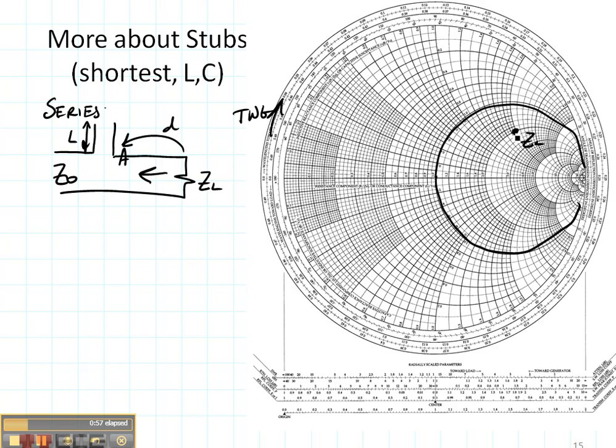So here's ZL and I'm going to rotate this distance D to ZA. So D is found by rotating that distance.